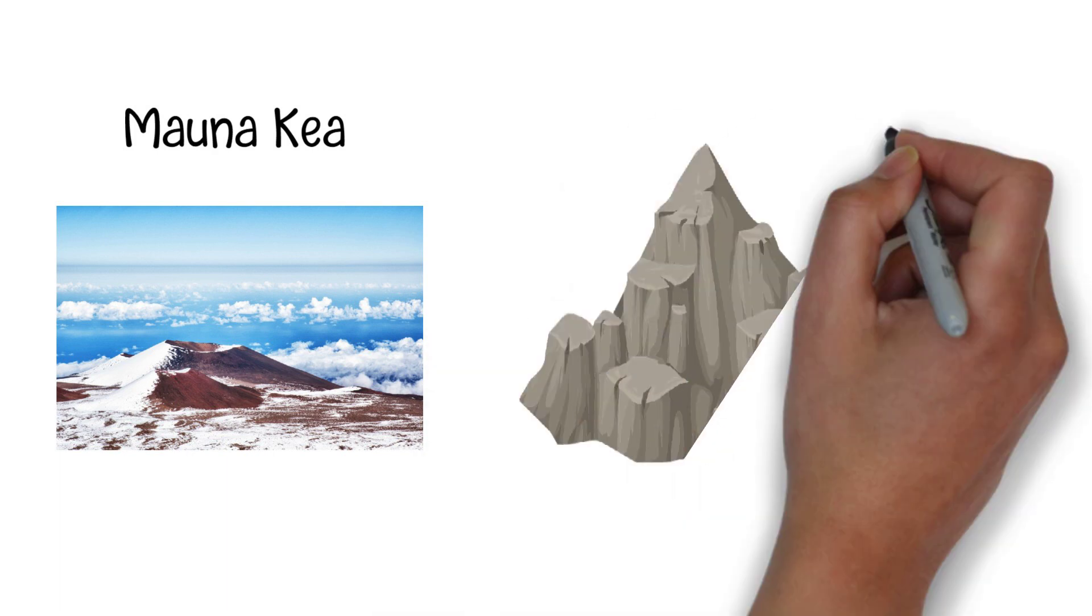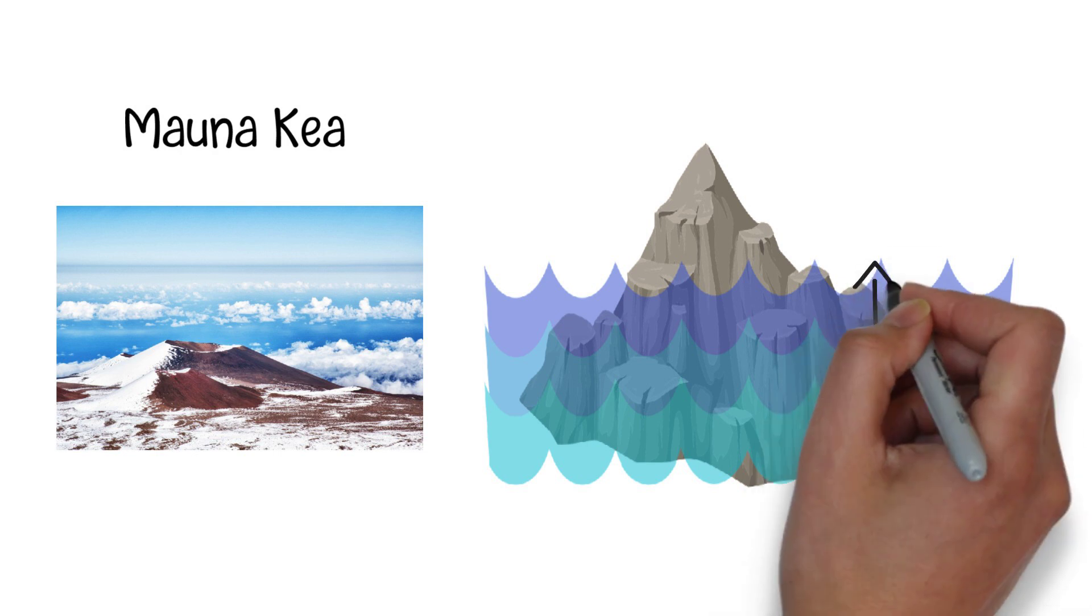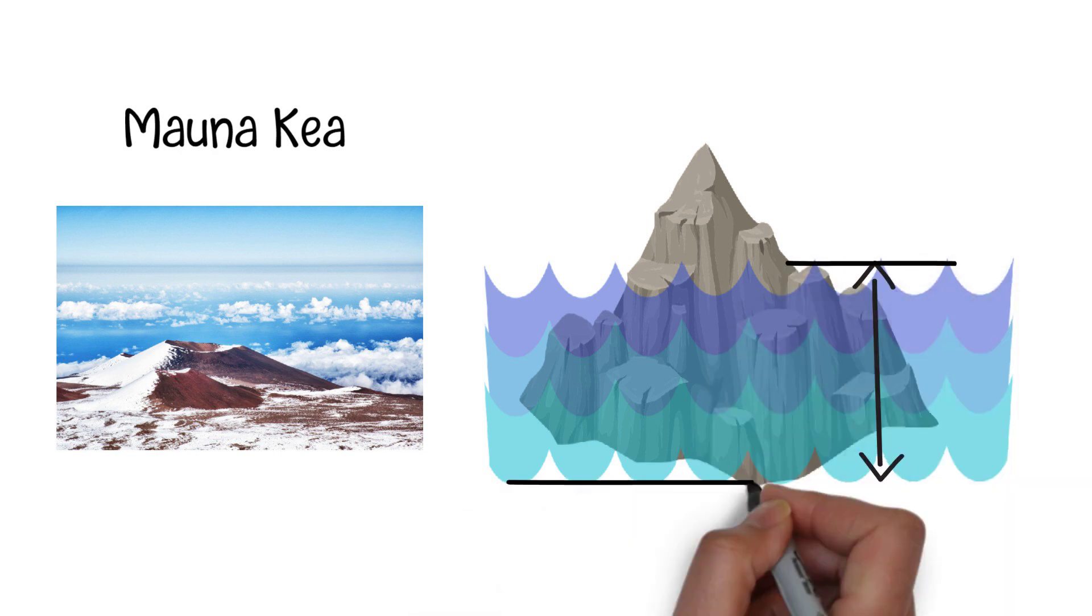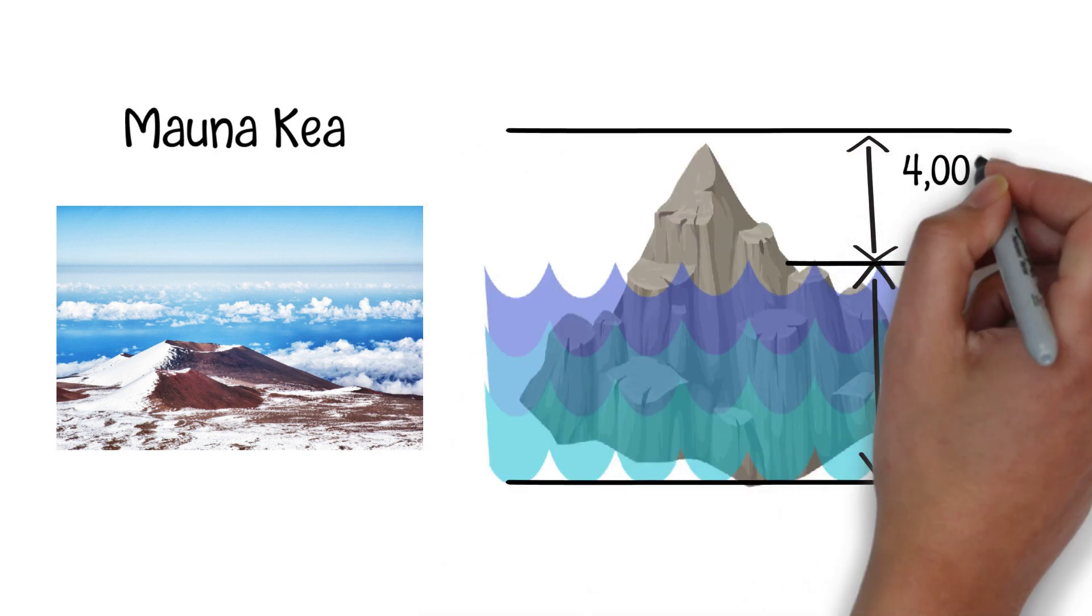Mauna Kea is actually an island. Unlike other mountains which are mostly on land, most of Mauna Kea is submerged beneath the ocean's surface. Mauna Kea's base is situated roughly 6,000 meters below sea level, while its summit reaches approximately 4,000 meters above sea level.